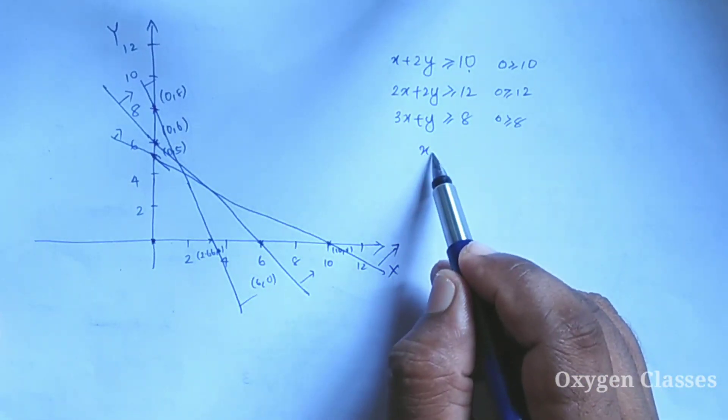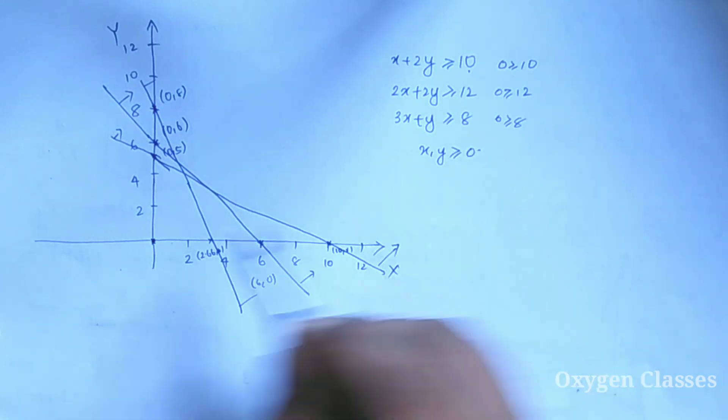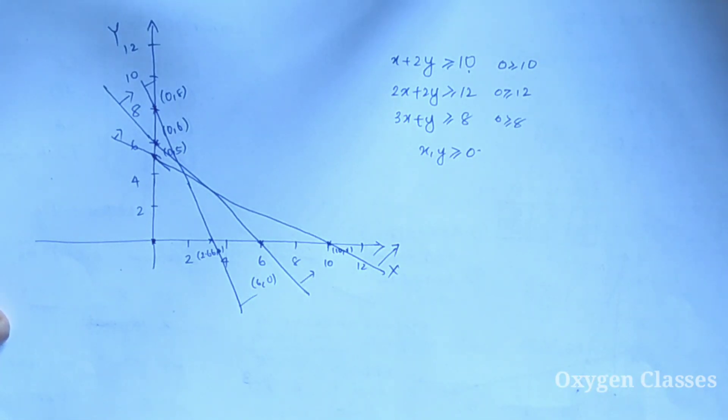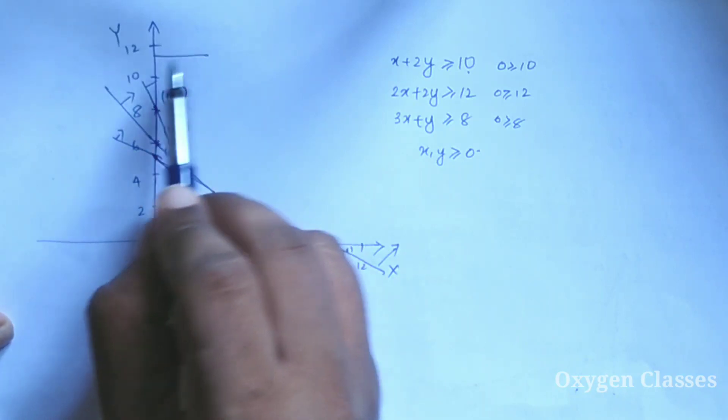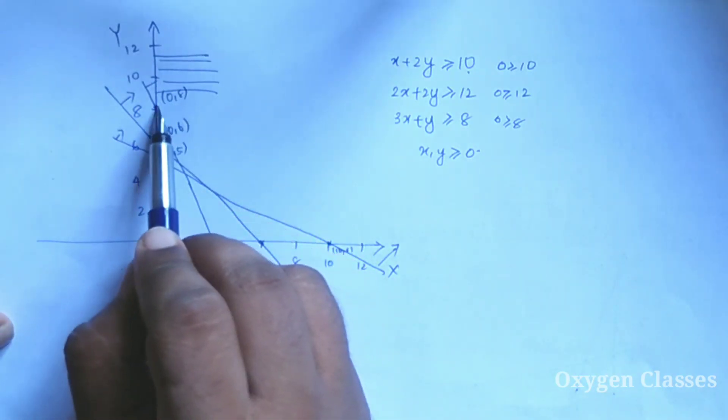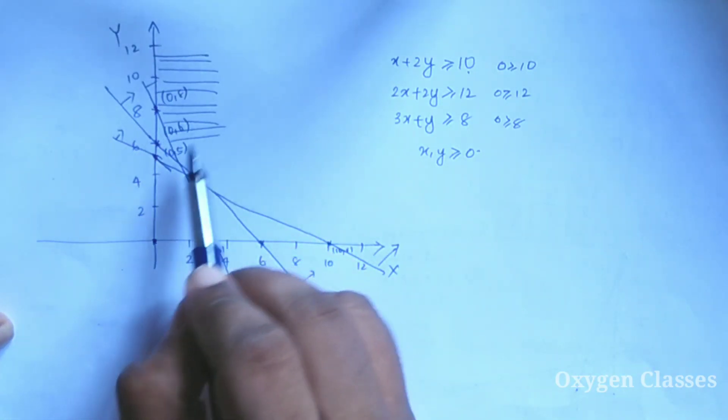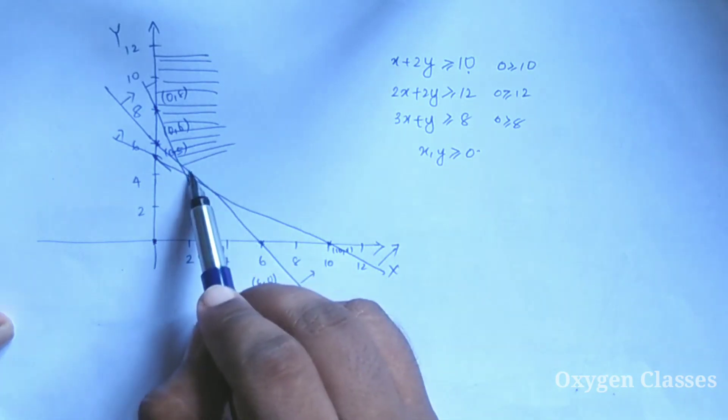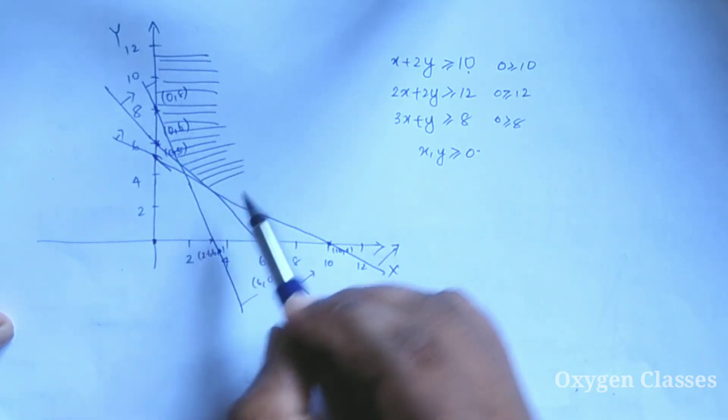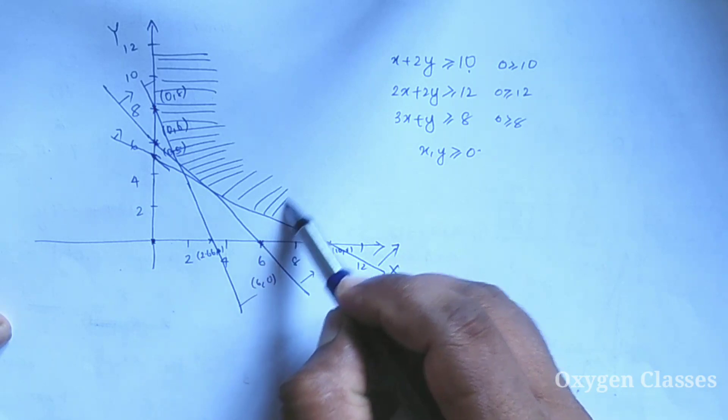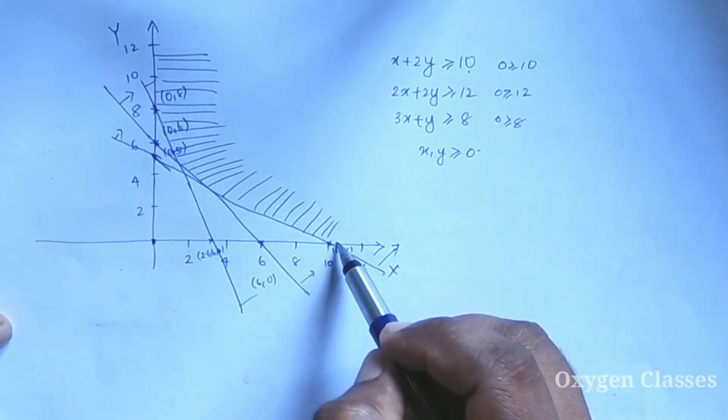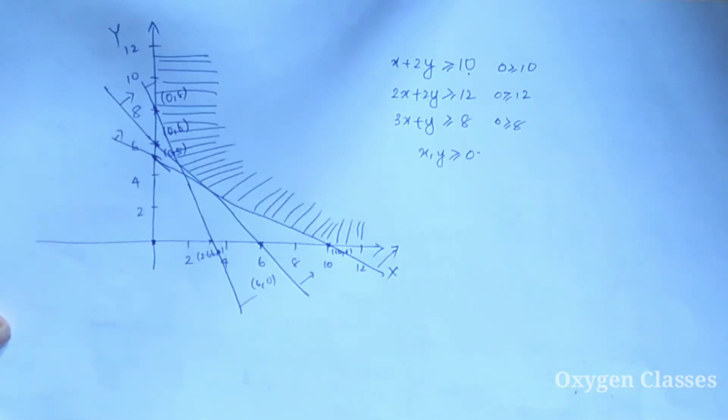Since X and Y are greater than or equal to 0, we select the first quadrant. This is the feasible region, bounded by the three lines.